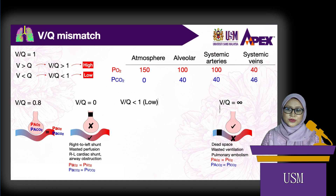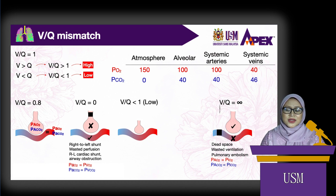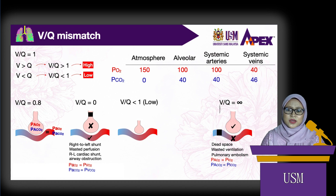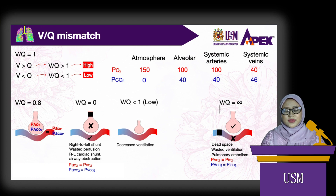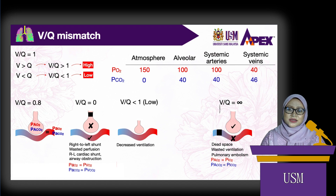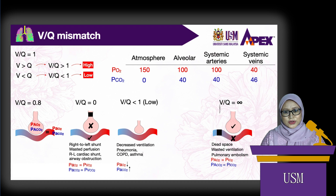When a lung region has a low VQ ratio, the region has low ventilation relative to perfusion. This can mean ventilation is reduced more than perfusion, or ventilation is increased but perfusion is even more increased. Usually, VQ ratio is low because ventilation is decreased. Unlike shunt, which has no ventilation at all, low VQ regions have some ventilation. Because ventilation is low relative to perfusion, gas exchange is also low. Therefore, pulmonary capillary blood from this region has a low pressure of oxygen and high pressure of carbon dioxide. Low VQ ratio can occur in pneumonia, chronic obstructive pulmonary disease, asthma, or pulmonary edema.